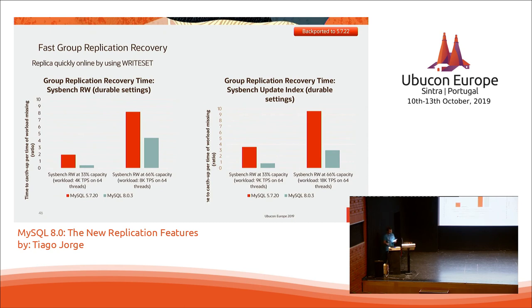This write set technology was something that group replication donated to classical replication — an interesting interaction. It was backported to 5.7.22. You have three modes: commit order, write set, and write set session. Write set session applies the same logic but per master session — things that don't intersect between sessions. Group replication provisions a new node via a classical replication link, so it benefits from this parallelization and can catch up faster when recovering a node.